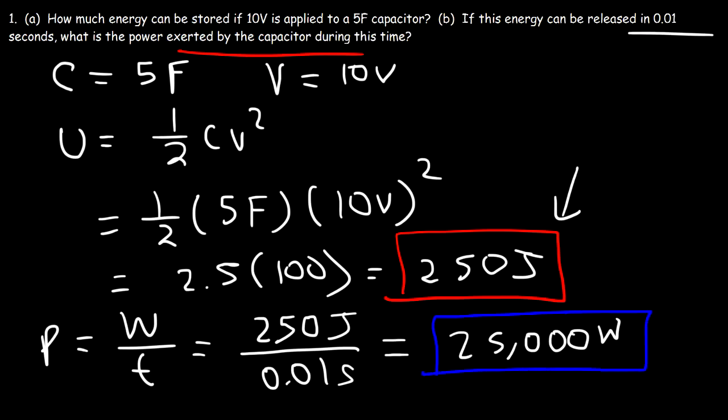Even though a capacitor may store a small amount of energy, it can store and deliver that energy in a very short period of time, so the power output of a capacitor can be huge even though it doesn't last very long. A capacitor is very quick in storing and delivering energy, but it doesn't store that much energy unless you have a very large capacitor.